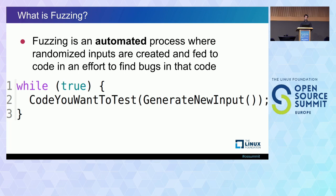So what is fuzzing? The way I think of it: it's an automated process where you're creating new randomized inputs and feeding them to a program in order to get that program to crash. It works like this pseudocode — an infinite loop — because we don't really know when to stop fuzzing. Fuzzing can show your code has bugs, but it can't prove it doesn't. Fuzzers frequently run for an infinite amount of time, though we have solutions for incorporating it into your workflow. On each iteration, you create a new input to feed to the code you want to test.